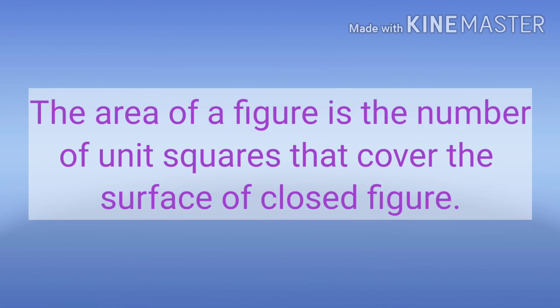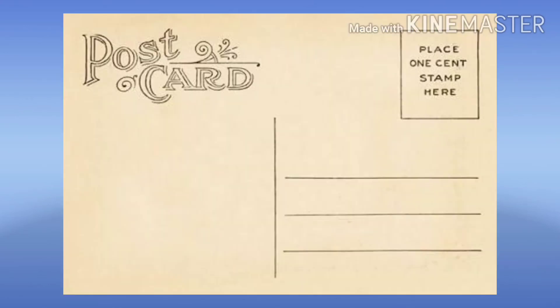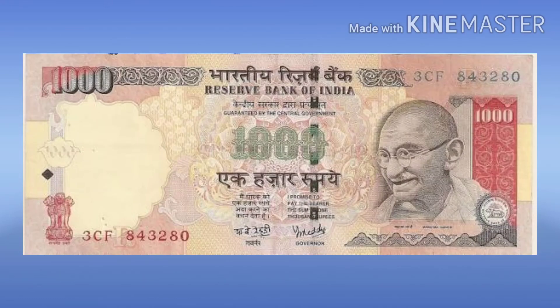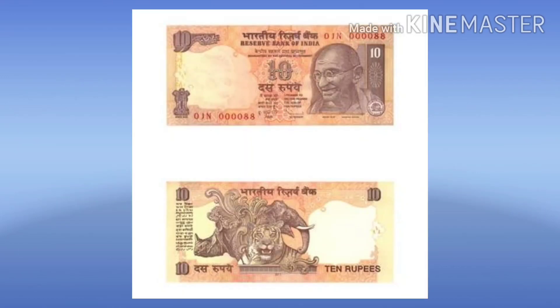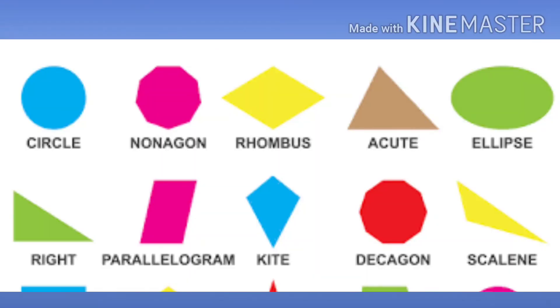Now let's know the difference between area and perimeter. Area is the two-dimensional space or region occupied by a closed figure, while perimeter is the distance around a closed figure. Area is the space inside the shape, but perimeter is its boundary. Note that two shapes may have the same perimeter but different areas, or the same area but different perimeters.